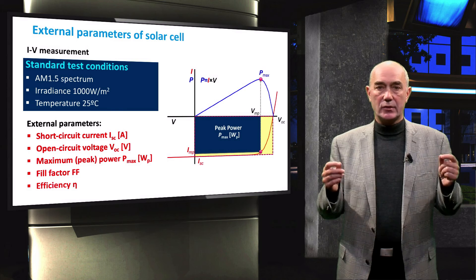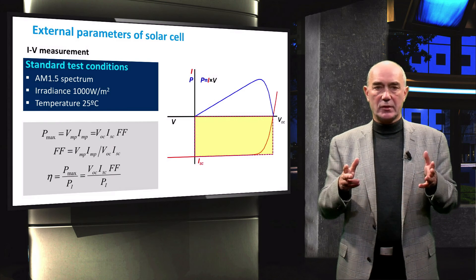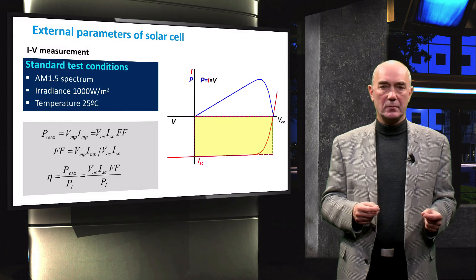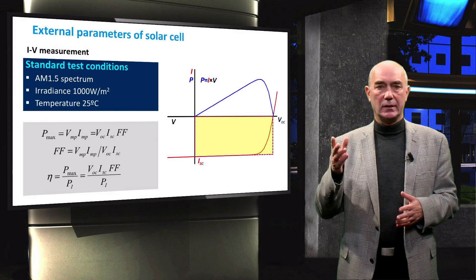Finally, using these external parameters, we can determine the conversion efficiency of a solar cell. The efficiency is the ratio of the maximum delivered power over the power of incident light, as shown by the equation in this slide. This week, we discussed the properties, carrier concentration profile, and band diagrams of a PN junction diode at thermal equilibrium, at bias voltage conditions, and under illumination. We determined the dark and illuminated JV curves step by step. Understanding the physical properties of a PN junction is important because it is the most important building block of a solar cell.